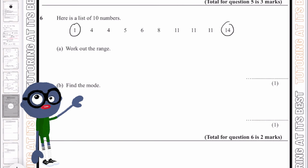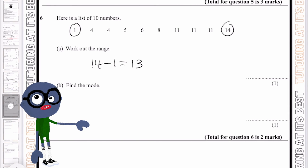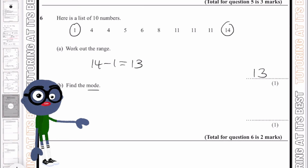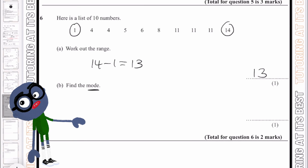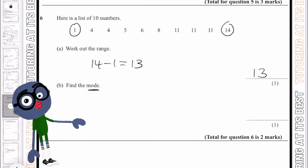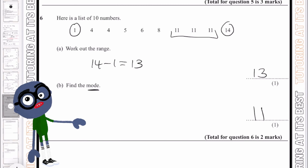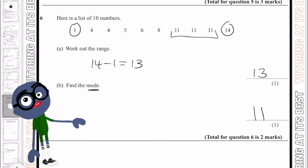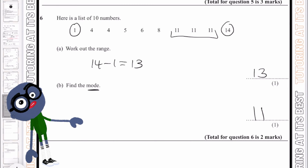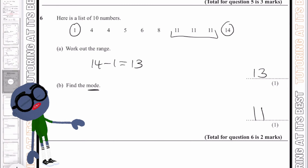Question 6a: work out the range — 14 minus 1 gives us 13. Then the mode, which is the most common value: 11 occurs three times, so 11 is our mode. I hope you're now getting a good understanding of median, mode, range, and mean.